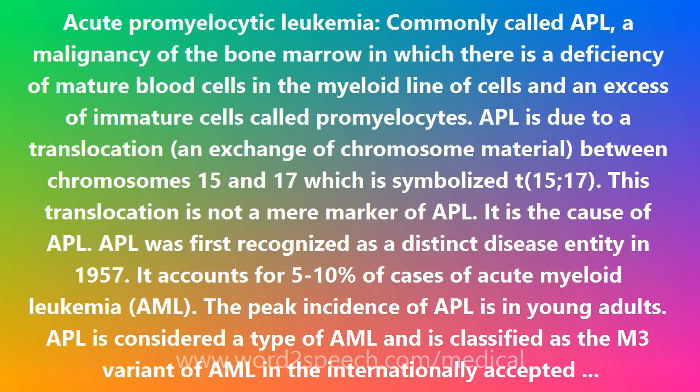APL was first recognized as a distinct disease entity in 1957. It accounts for 5–10% of cases of acute myeloid leukemia, AML. The peak incidence of APL is in young adults. APL is considered a type of AML and is classified as the M3 variant of AML in the internationally accepted French-American-British, FAB, classification.